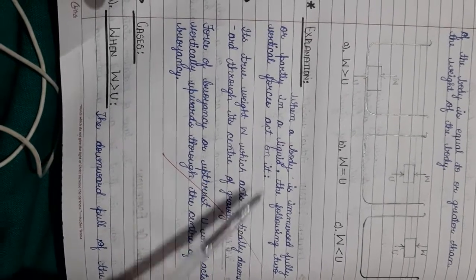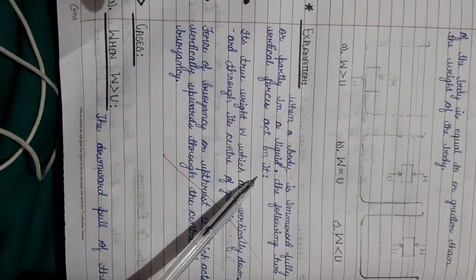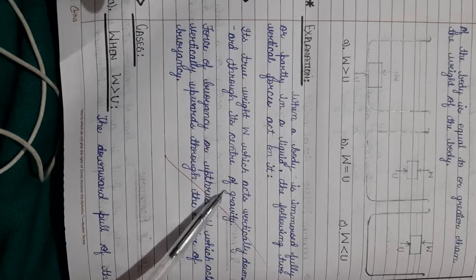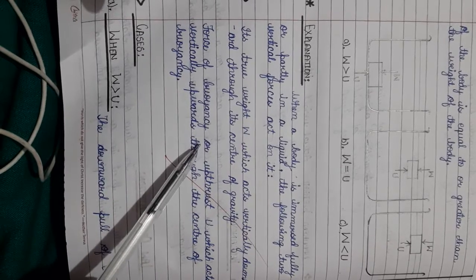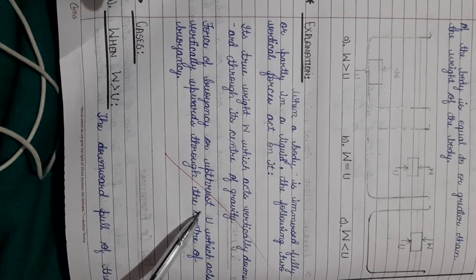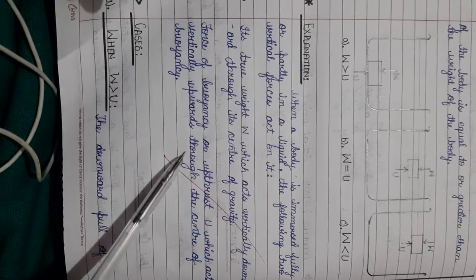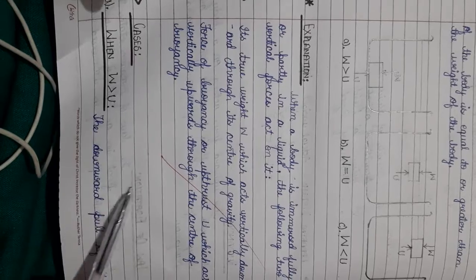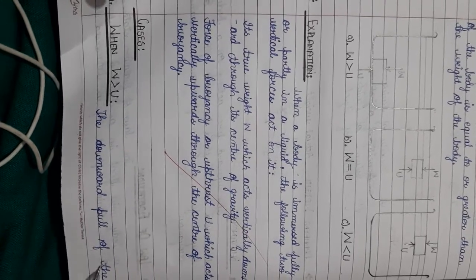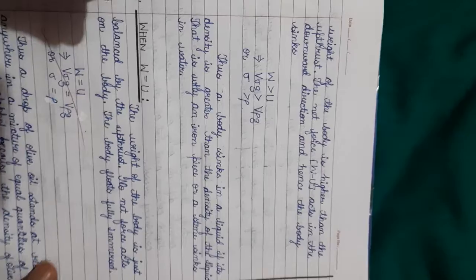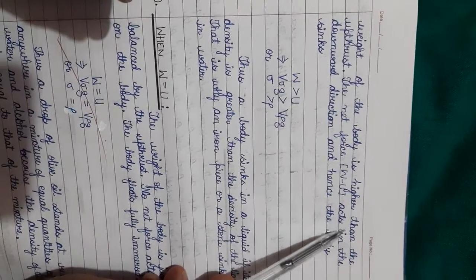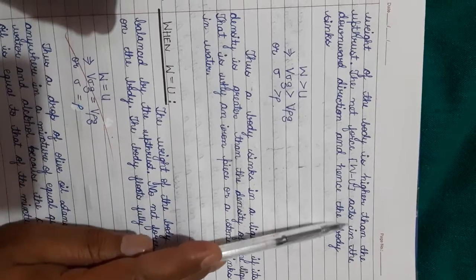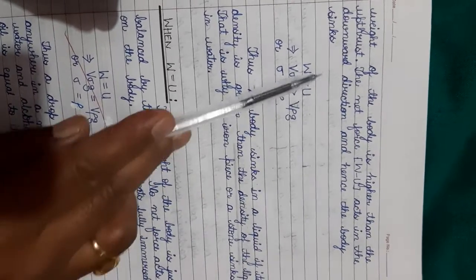Immersed fully or partially in liquid. For floating, two vertical forces act on it. The weight acts vertically downward through the center of gravity. The force of buoyancy or upthrust U acts upward through the center of buoyancy. In cases when W is greater than U, the downward force or the weight of the object is higher than the upthrust. And the net force W minus U acts in the downward direction hence the body sinks.